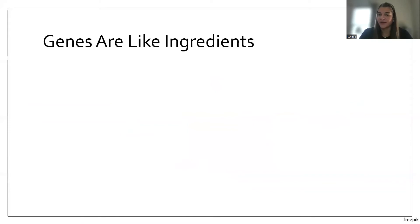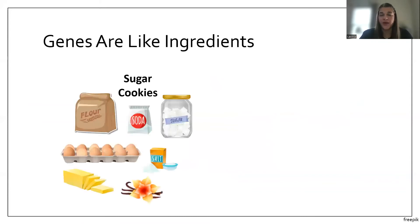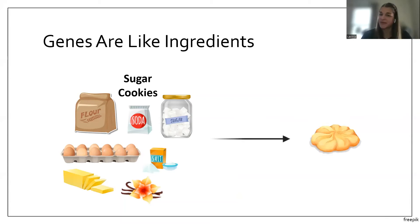Trying to understand what a gene is can seem really complicated, so let's break it down. Genes are pretty much like ingredients. Let's say you want to bake some sugar cookies — for that, we need certain ingredients like flour, baking soda, eggs, and butter that are essential. We need those ingredients to make a cookie at all. Just like those essential ingredients, there are genes that are essential for both human and bacterial functions — a subset of genes that, without them, we or bacteria would not be able to function.